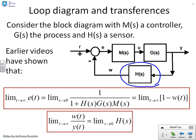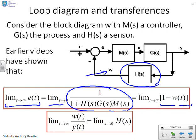Earlier videos have shown that we can calculate the steady state offsets using the final value theorem. The limit as T goes to infinity of E of T is given as the limit as S goes to zero of 1 over 1 plus H of S times G of S times M of S. You'll also notice that E of T is the same as 1 minus W of T, where W is a signal in the diagram.